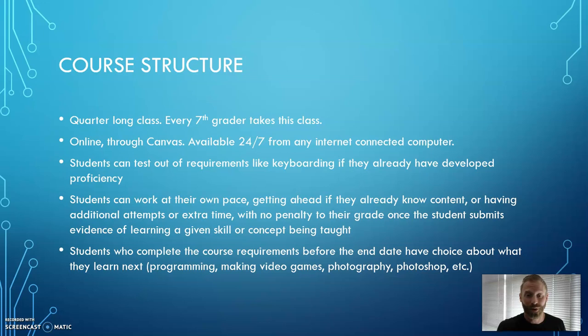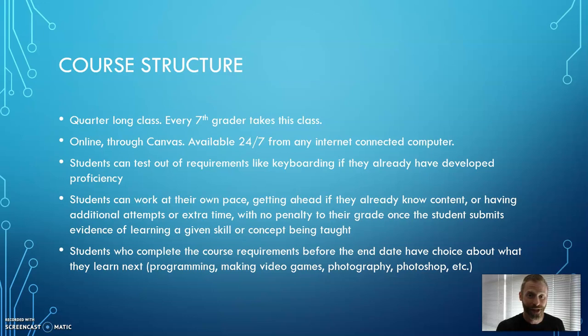You can test out of requirements like keyboarding if you already have proficiency — if you've already learned to type at certain speeds, you'll be able to test out and skip the beginner or intermediate practice levels, depending on your speed. All students can work at their own pace. If you already know some of the content, you'll be able to get ahead. If you need extra time, you can have additional time and extra attempts with no penalty on your grade. Once you submit evidence of learning the concept or skill, it's 100% full credit.